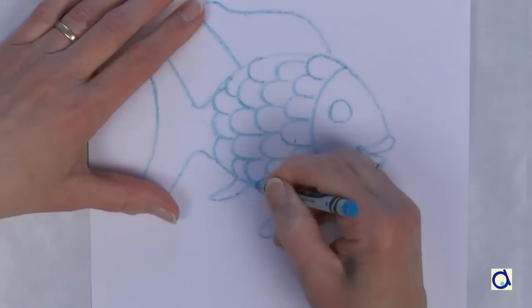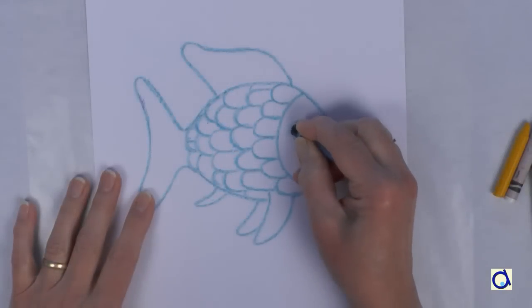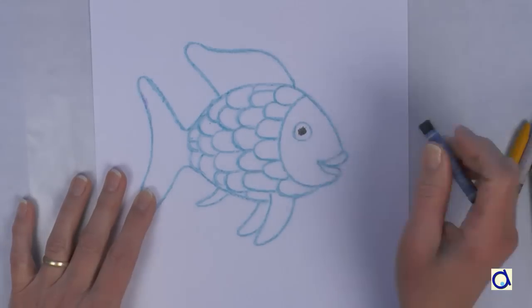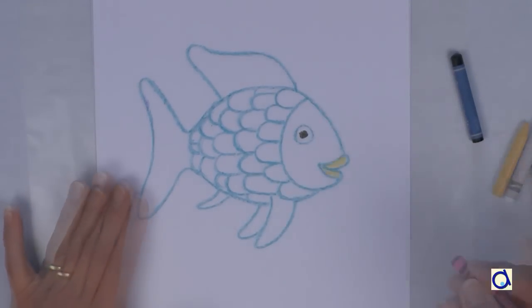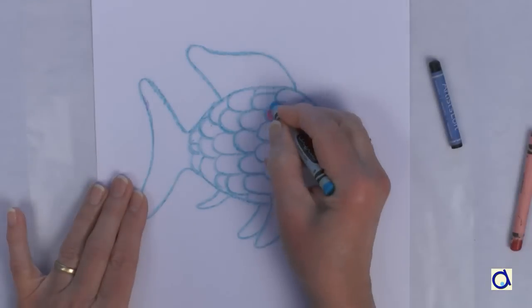Then I coloured some details of the fish with other colours of crayons. For example, I coloured the pupil of the fish in black, the mouth yellow, some scales red and others white. I also drew white lines on the fins.